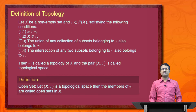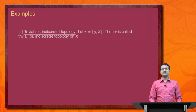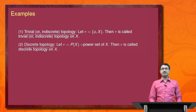Now we introduce the definition of open set. Let (X, tau) be a topological space; then the members of tau are called the open sets in X. For example, let tau = {phi, X}; then it is obvious that it is a topology, and this topology is called the trivial or indiscrete topology on X. If we choose tau equal to the power set of X, then it also forms a topology, and this topology is called the discrete topology on X.